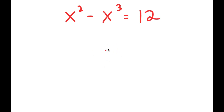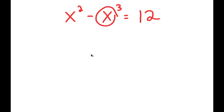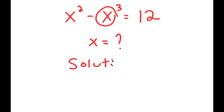Alright, so in this video I'm going to be solving the equation x squared minus x to the power of 3 is equal to 12. So to start, our only variable is x in this equation, so I want to find the value of x. And for my solution, I'm going to first start by rewriting 12 as 4 plus 8.